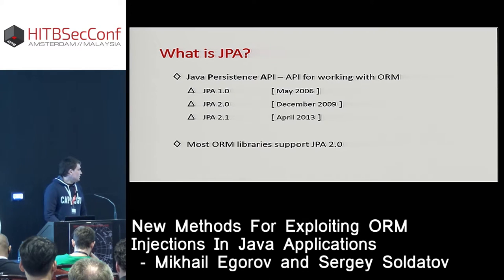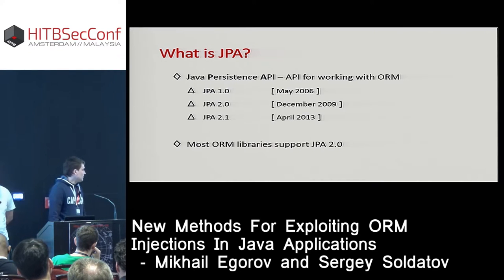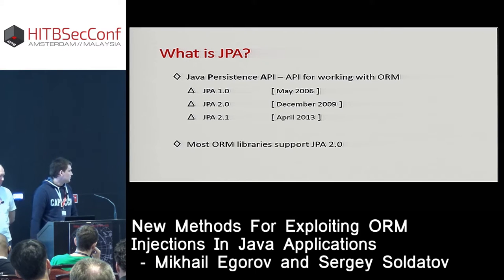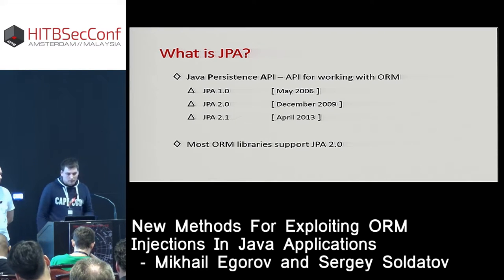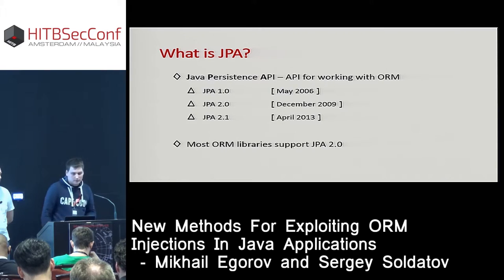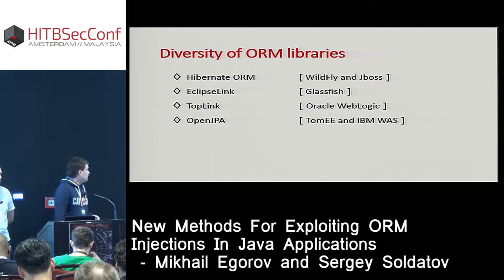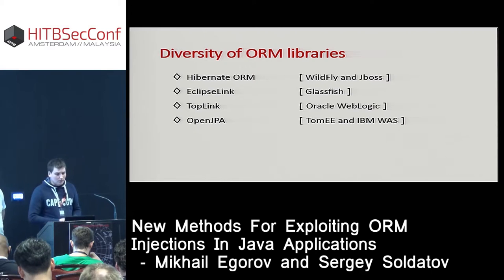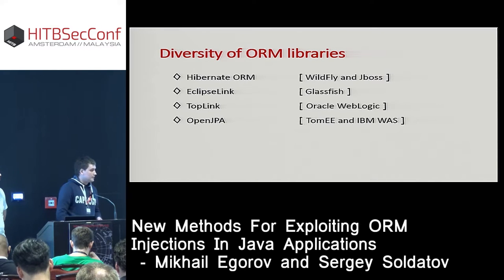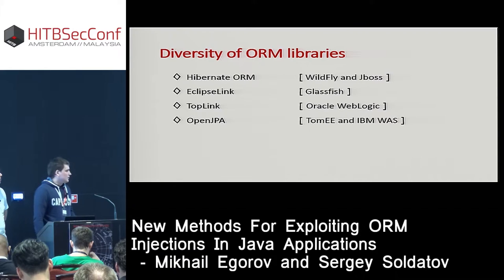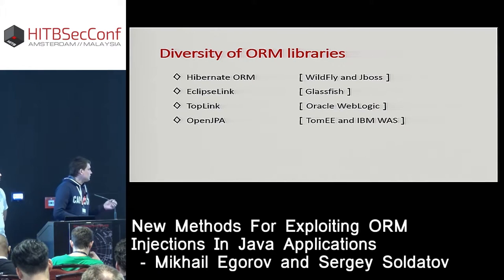JPA stands for Java Persistence API. It is the standardized API exposed by an ORM library, so a Java application communicates with ORM through this API. There are three main versions of JPA, and most ORM libraries support JPA 2.0. There are a lot of ORM libraries in Java. On the slide you can see four libraries used mostly in practice, and in brackets you can see the J2EE application servers that are shipped with a particular ORM library.